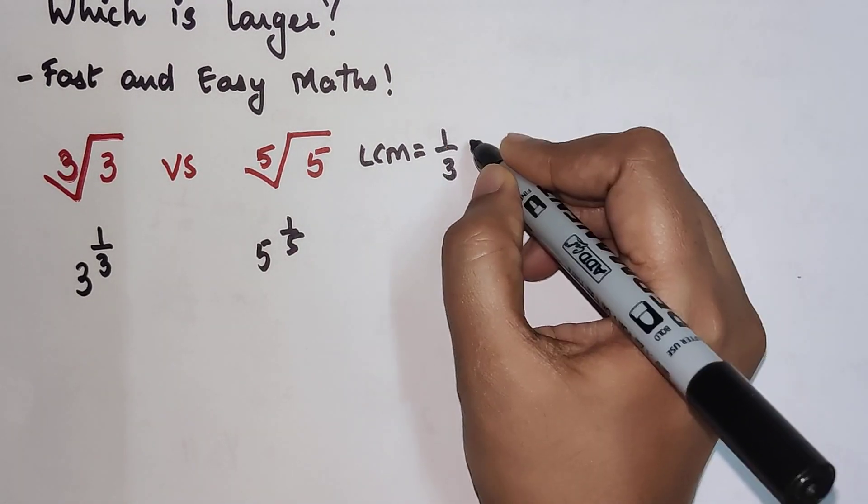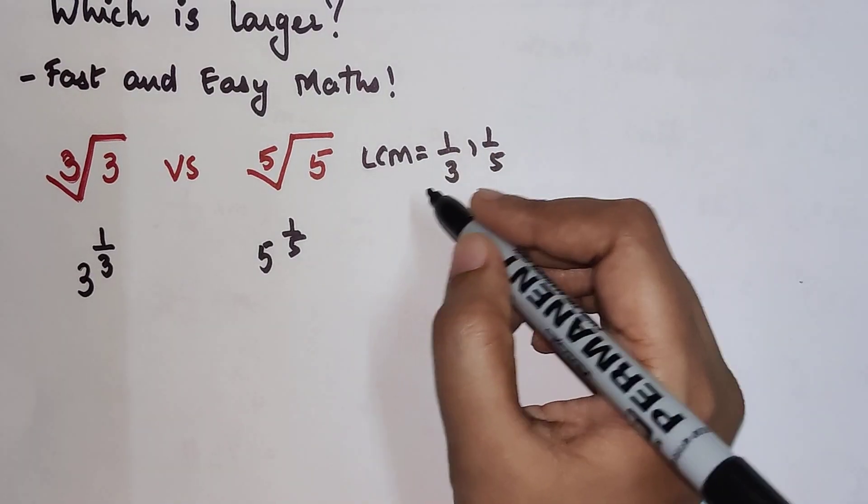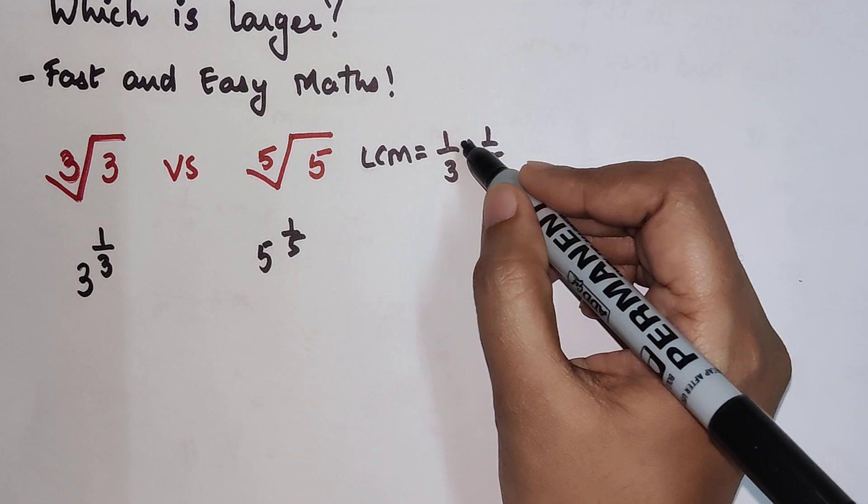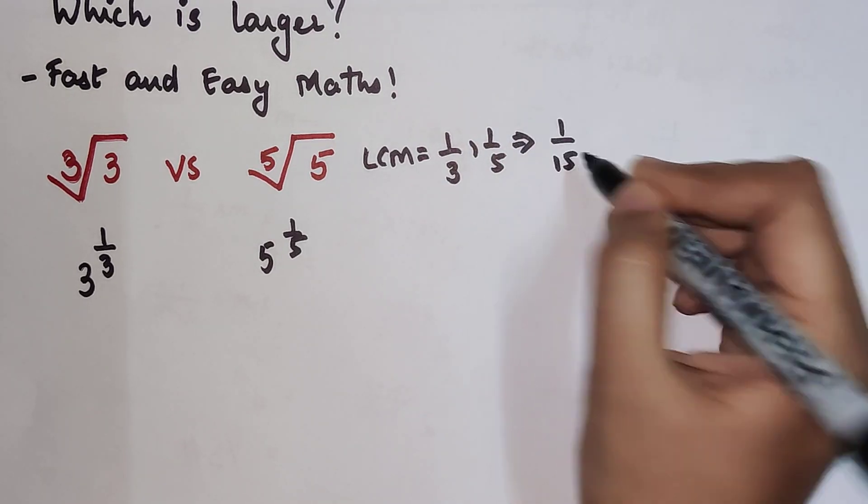Here you are not going to consider this. You are just going to write this as nothing but 1 upon 15.